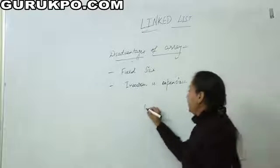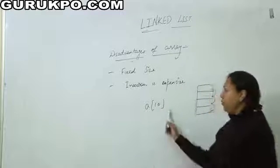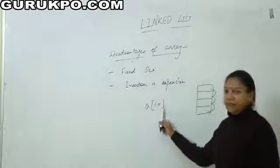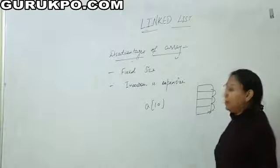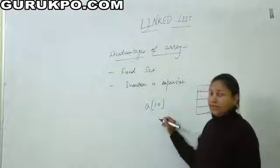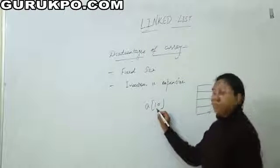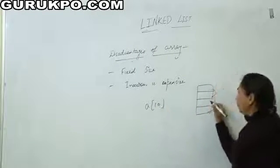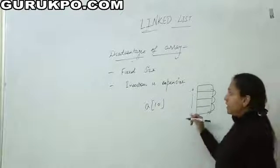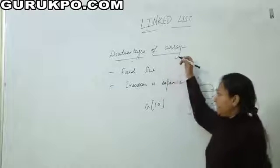If we have an array of 10 elements — the name of our array is A — we can store 10 elements in this array. Suppose I want to store an 11th element in this array; that is not possible because memory was allocated only for 10 elements. The size of array is fixed, and that is the main problem with the array.